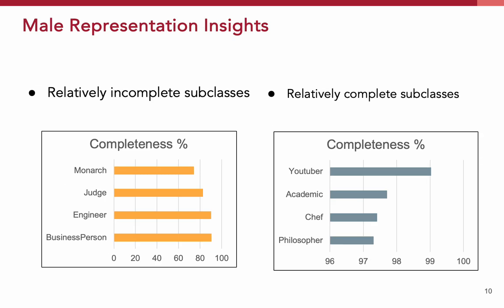Switching our focus to male representation, we observe a mix of completeness across various professional subclasses. On the left, we see subclasses like monarchs, judges, engineers, and businesspersons where the representation completeness varies widely, ranging from low to moderate levels. For instance, monarchs and judges show significantly lower completeness percentages, indicating gaps where male contributions might be underrepresented in our dataset. Conversely, on the right, we have subclasses like YouTubers, academics, chefs, and philosophers where the representation is much more complete, with percentages nearing 100%. This high level of completeness suggests that male contributions in these fields are well documented and prominently visible.